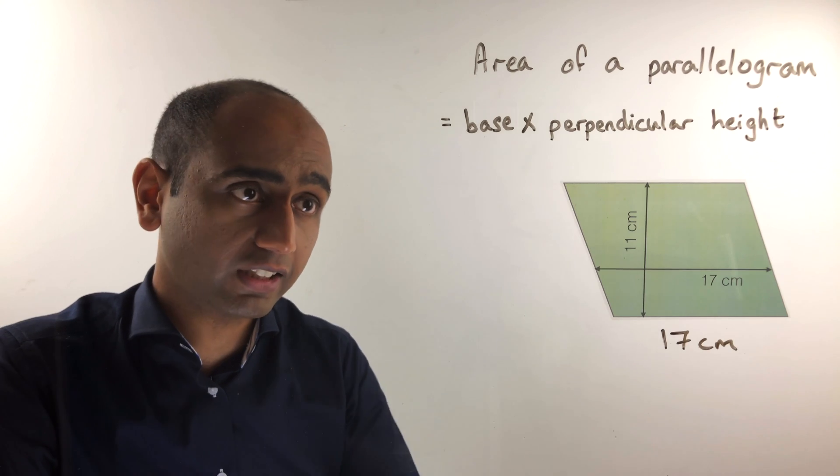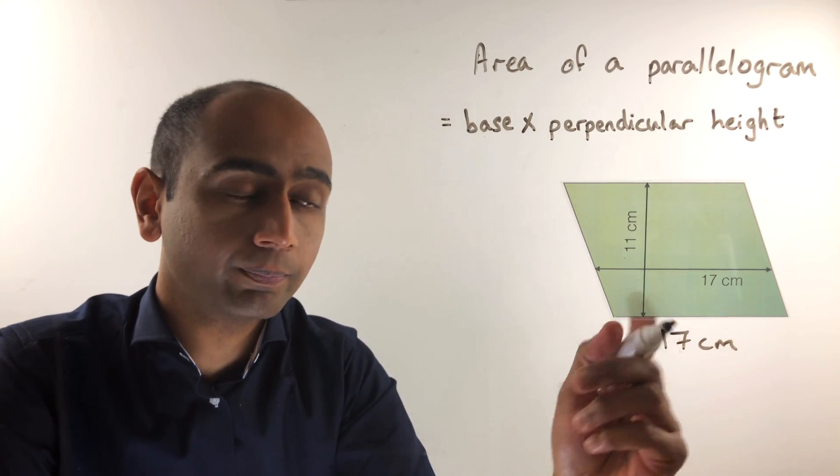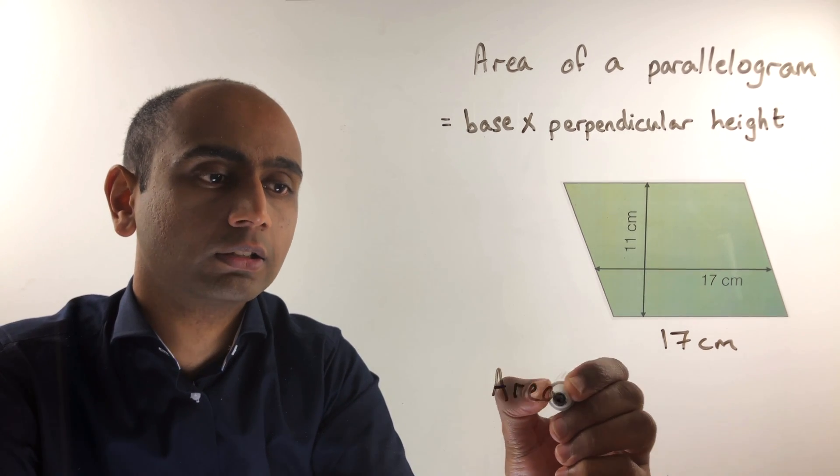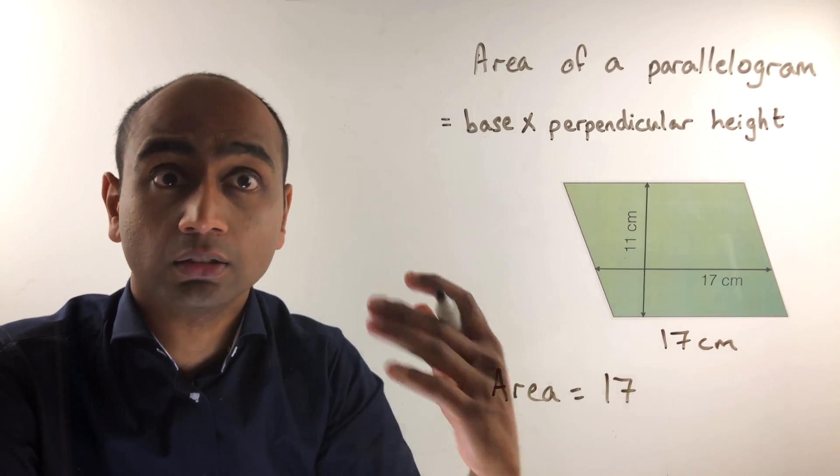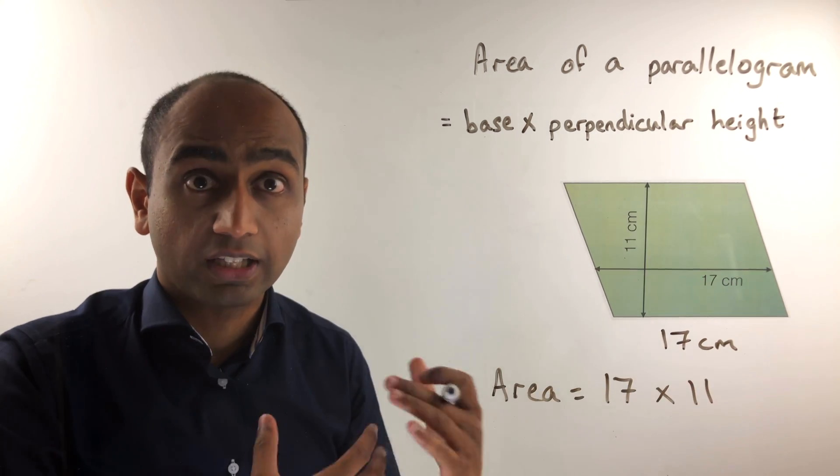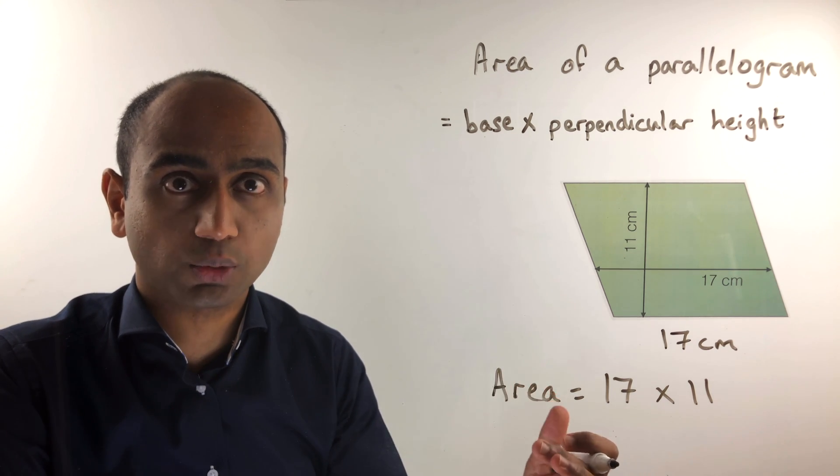We have got a perpendicular height that is 11 centimetres. We've got a right angle here, so the area is simply going to be the base, that's 17, times the perpendicular height, and that gives us an answer of 187 centimetres squared.